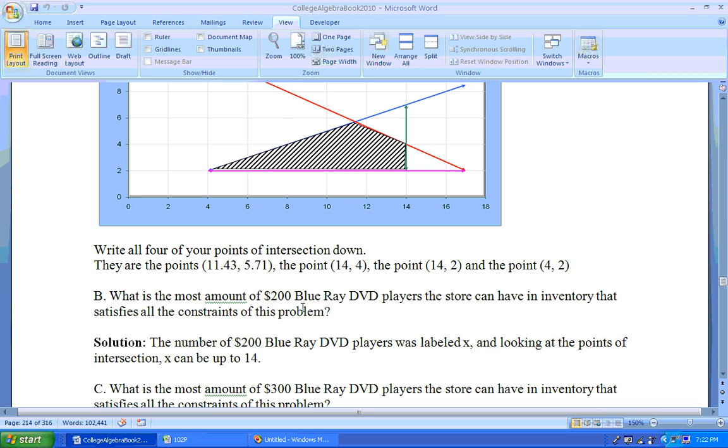what is the most amount of $200 Blu-ray DVD players the store can have in inventory that satisfies all the constraints? Well, the number of $200 Blu-ray DVD players was labeled x. And the highest the x can be was 14. So there you go, 14.